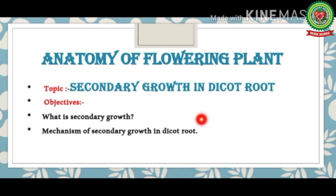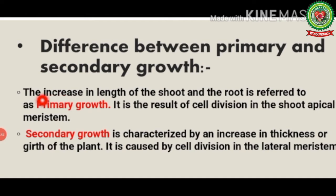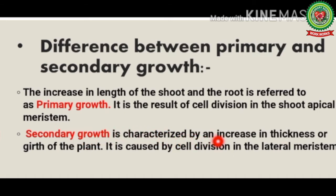Before proceeding with secondary growth in dicot root, we must know what is primary growth and the basic difference between primary growth and secondary growth. Primary growth is actually the increase in length of the shoot and root — it is the lengthwise growth of the plant, resulting from cell division in the shoot apical meristem. Secondary growth is characterized by an increase in thickness or girth of the plant, caused by cell division in lateral meristem.